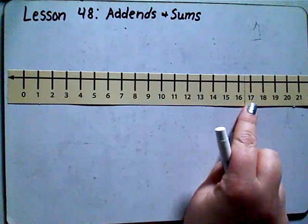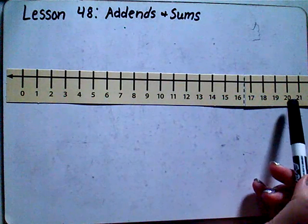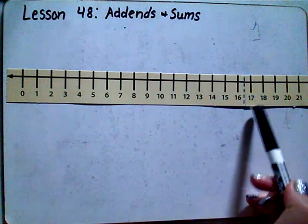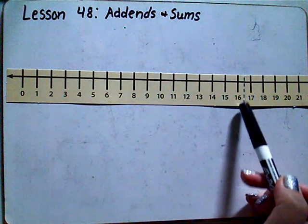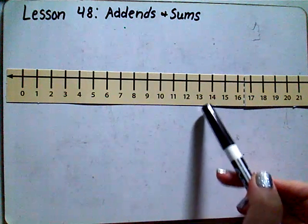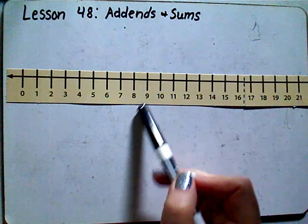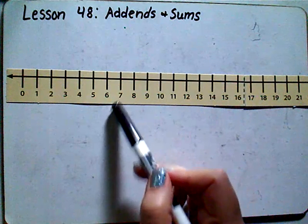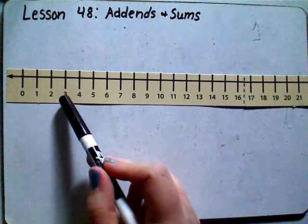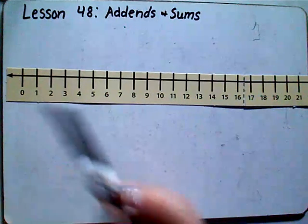Now we're going to start at twenty and count backwards. Ready to count with me? Twenty, nineteen, eighteen, seventeen, sixteen, fifteen, fourteen, thirteen, twelve, eleven, ten, nine, eight, seven, six, five, four, three, two, one, zero. Good.